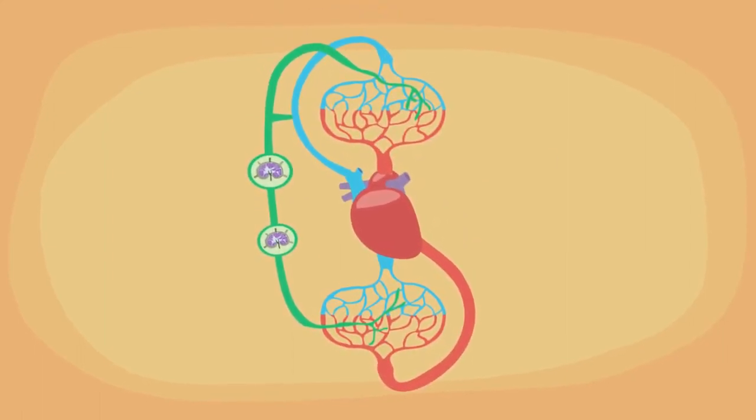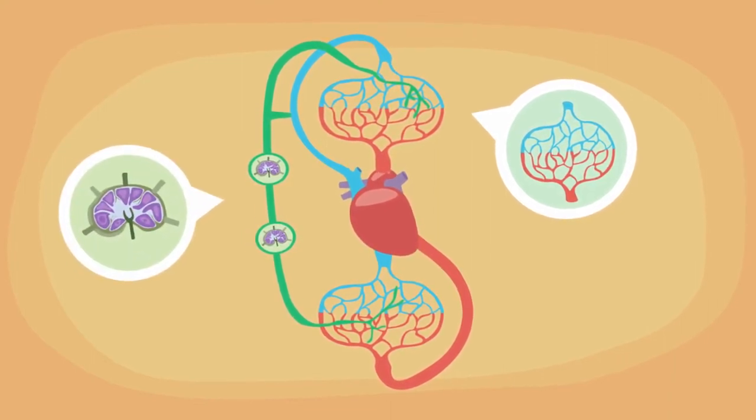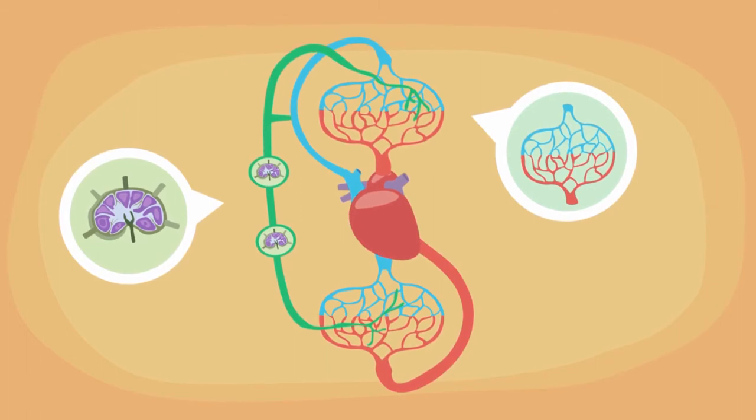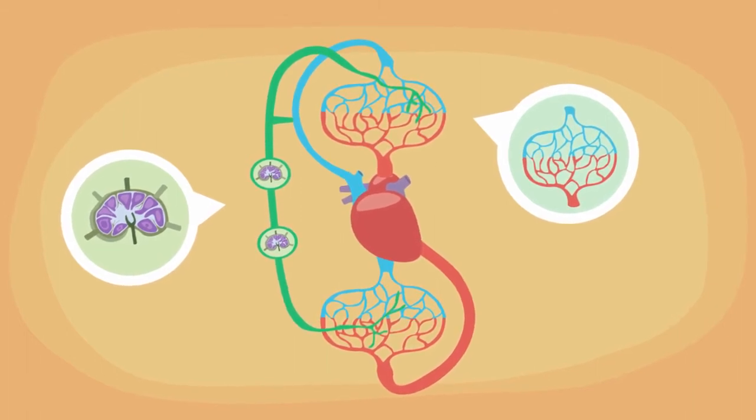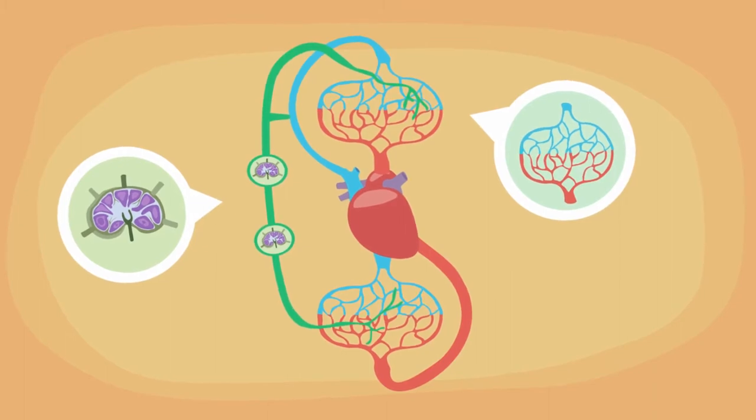T lymphocytes can also use the lymphatic system to move around the body. In the lymphatic system, T lymphocytes migrate from one draining lymph node to the next, sampling antigens presented by antigen-presenting cells as they go.